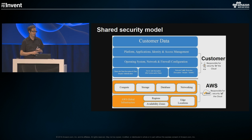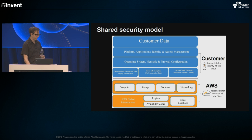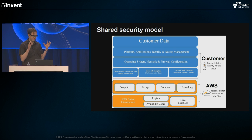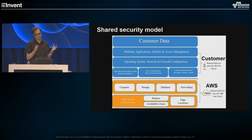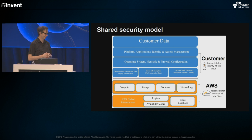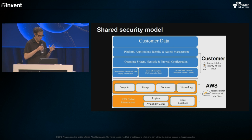Let's start with the idea of the shared security model. The idea is that together we're trying to create a secure environment. AWS is working to create a secure infrastructure that customers can build upon — compute, storage, database, networking. And customers are responsible for their data, the configuration of their networks, IAM policies, operating systems, and these kinds of things.